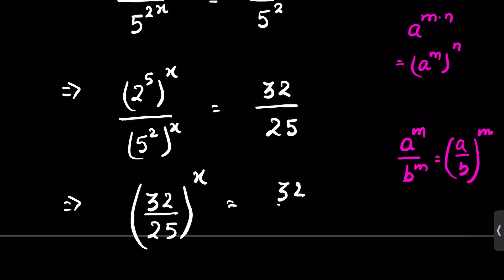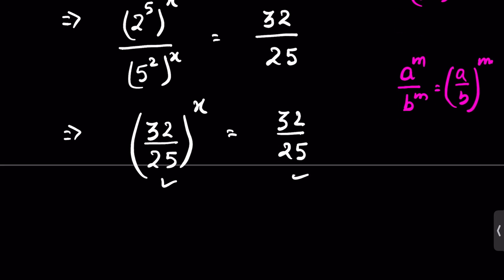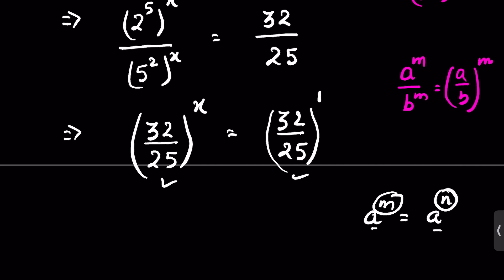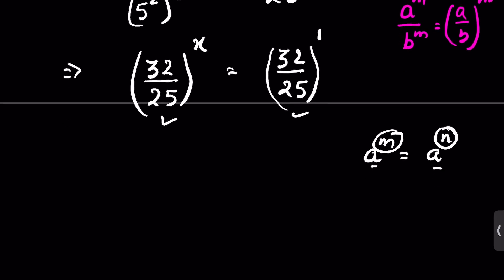Both bases are now the same. Using the identity: if a raised to the power m equals a raised to the power n, and a is not equal to 0 or 1, then m equals n. Here, 32/25 raised to the power x equals 32/25 raised to the power 1, so x is equal to 1.